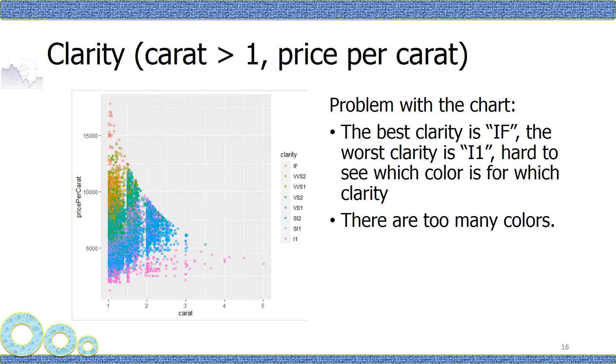Here we go. The best clarity is that orange color. Can you see? It is higher in price. And then the worst clarity is that pinkish. The price is lower.